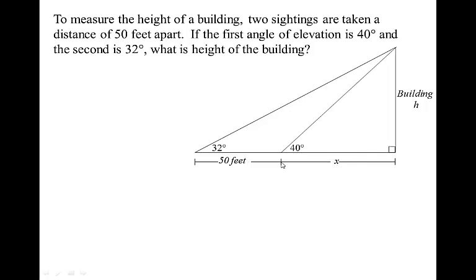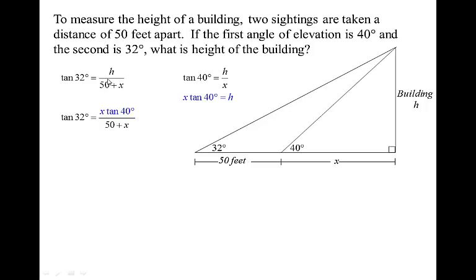What we don't know is this x value — the distance between the 40-degree sighting and the base of the building. We can't determine that directly, so we set up two equations with two unknowns. Looking at the big right triangle, tangent of 32 degrees equals h over the quantity 50 plus x. Looking at the small right triangle, tangent of 40 equals h over x, so x tangent 40 equals h. We substitute: replace h in the first equation with x tangent 40 degrees. Now we're down to one equation with one unknown — it's all algebra.